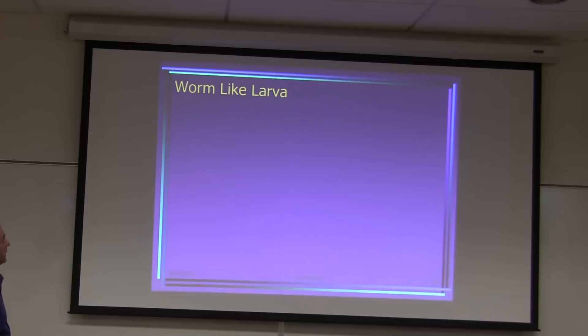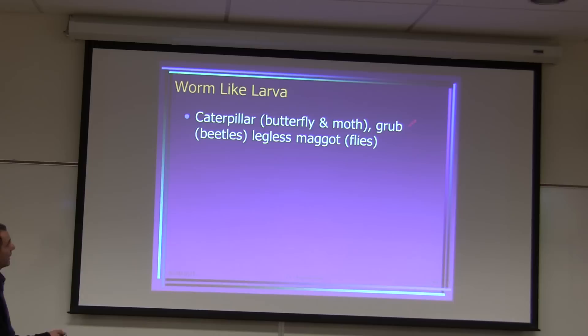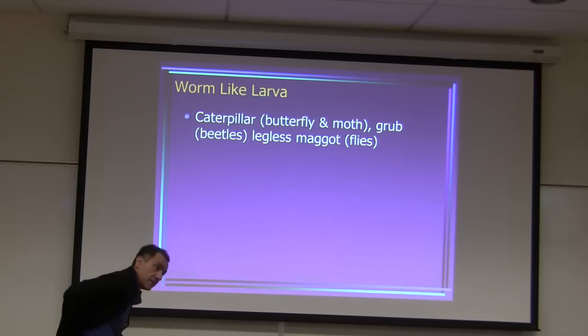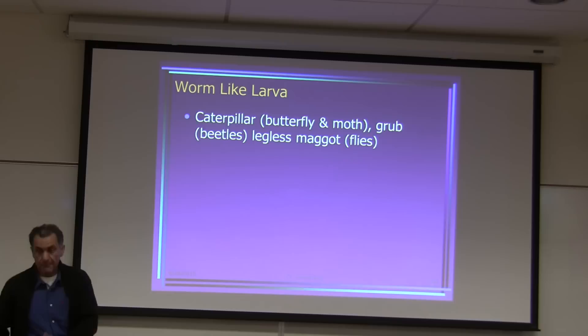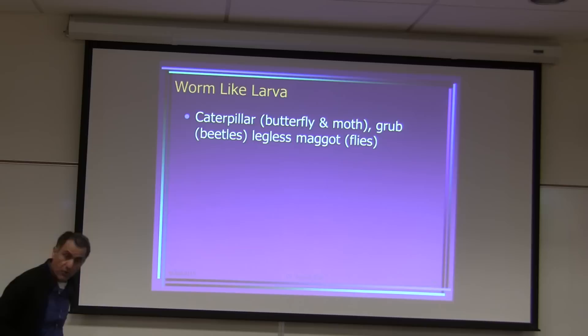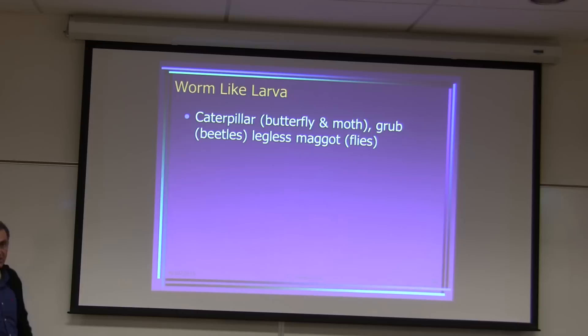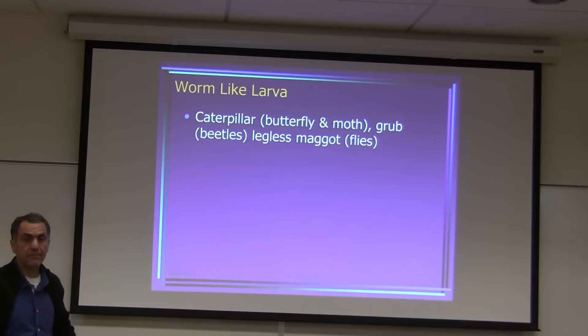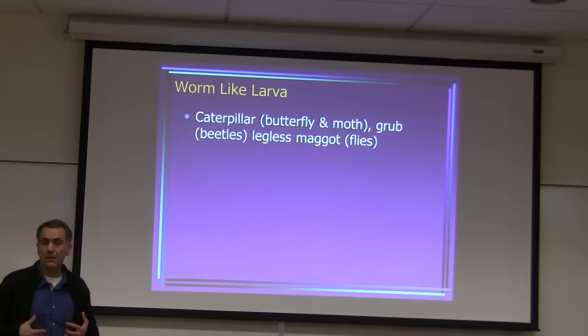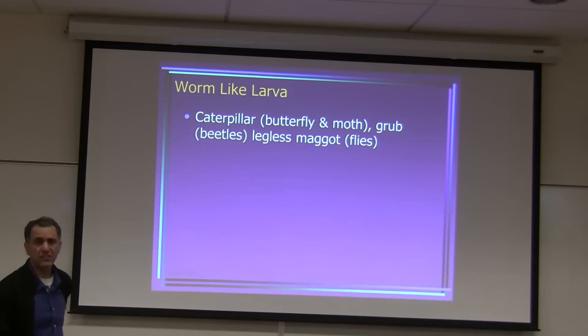Worm-like larvae include caterpillars, butterfly larvae, and grubs. Grub fly larvae are ingested through contaminated feces or the environment, develop in the stomach, and when ready to become adult flies, they exit by poking a hole through the back of the animal. Farmers cannot sell the leather of infested cows, and this can cause infection and death in the animal.